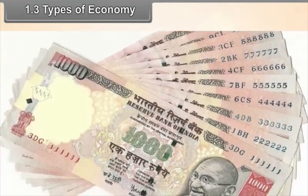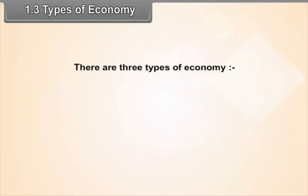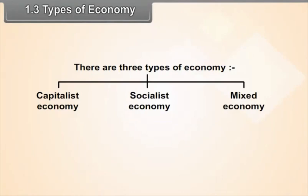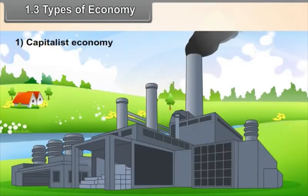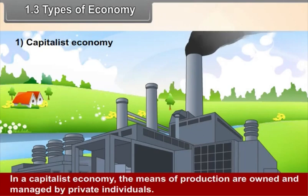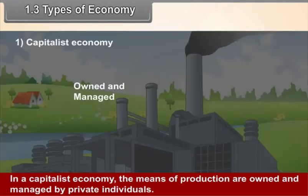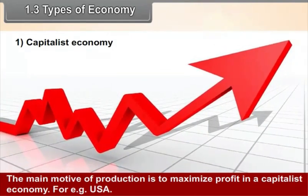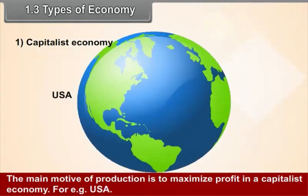1.3 Types of Economy. There are three types of economy: 1. Capitalist Economy, 2. Socialist Economy, 3. Mixed Economy. In a capitalist economy, the means of production are owned and managed by private individuals. The main motive of producers is to maximize profit. For example, USA.